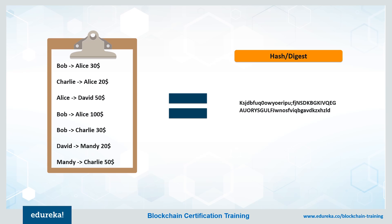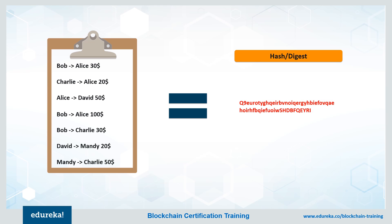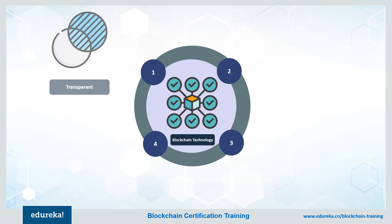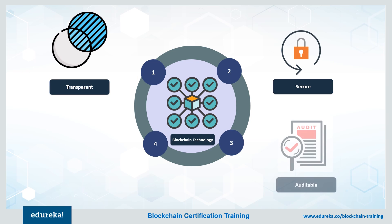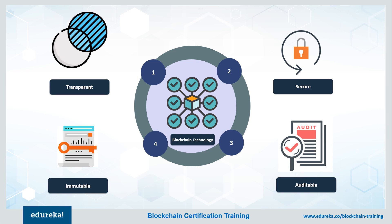Hashing also provides a way to identify any fraudulent changes someone might try to make. This is because a slight change in the input to a hash function changes the hash or digest completely, which is a clear giveaway for something fishy going on in the network protocol.